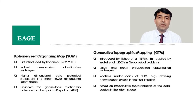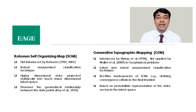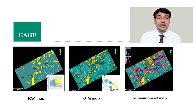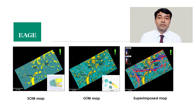In this study, we used two unsupervised classification techniques, namely Self-Organizing Map (SOM) and Generative Topographic Mapping (GTM). In SOM, data vectors are statistically projected onto a lower-dimensional latent space, preserving the geometrical relationship between the data points, whereas GTM is based on probabilistic representation of the data vectors in the latent space.